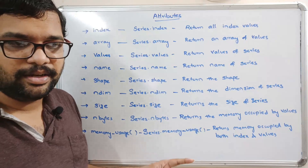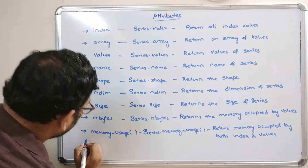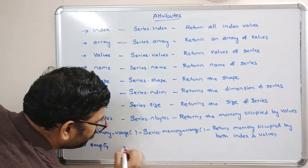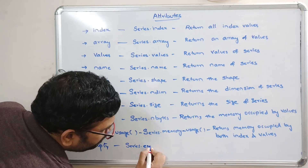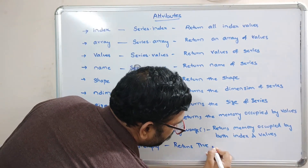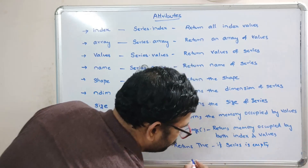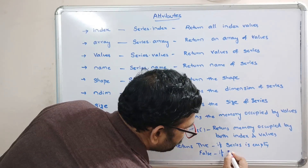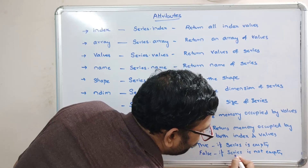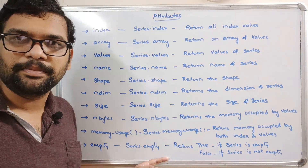The empty attribute is a boolean attribute. The syntax is series.empty — it returns True if the series is empty, meaning if the series doesn't have any values, and it returns False if the series is not empty, meaning if the series consists of any values.